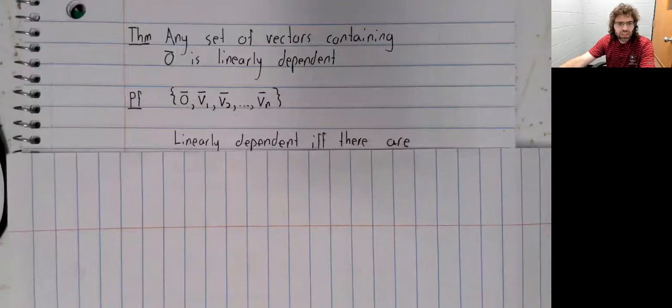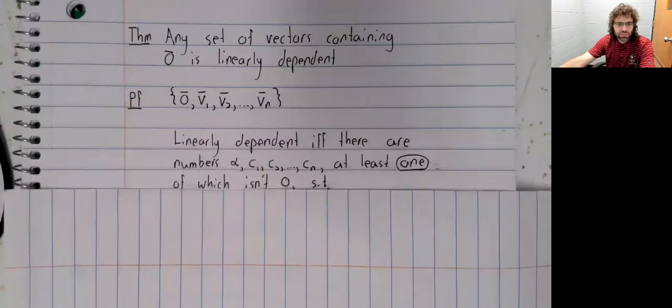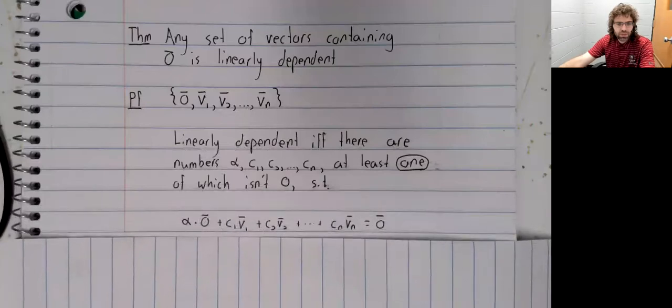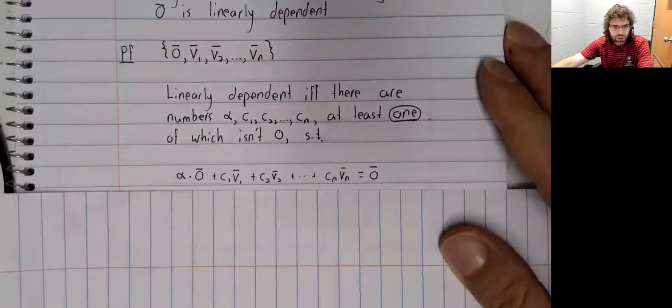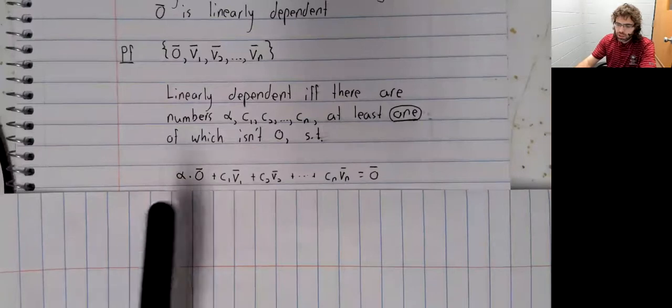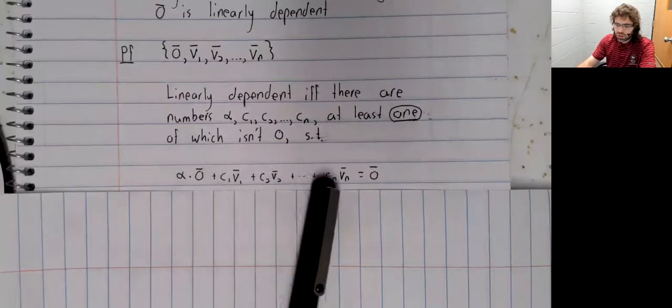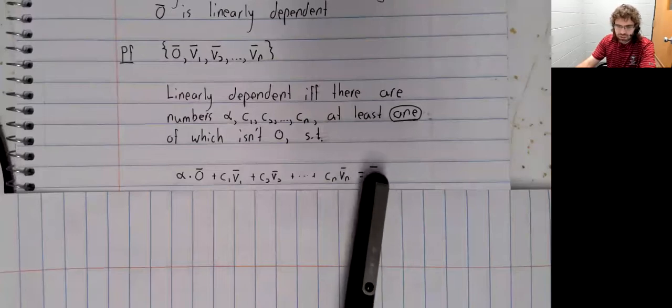To be linearly dependent, there have to be numbers, at least one of which is not zero, such that this linear combination is zero.